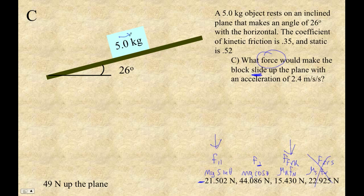If the box is sliding up the plane, I think that the kinetic friction would be down the plane. Alright, so we've got 15.430 down the plane, and that's because the friction always opposes the sliding motion.